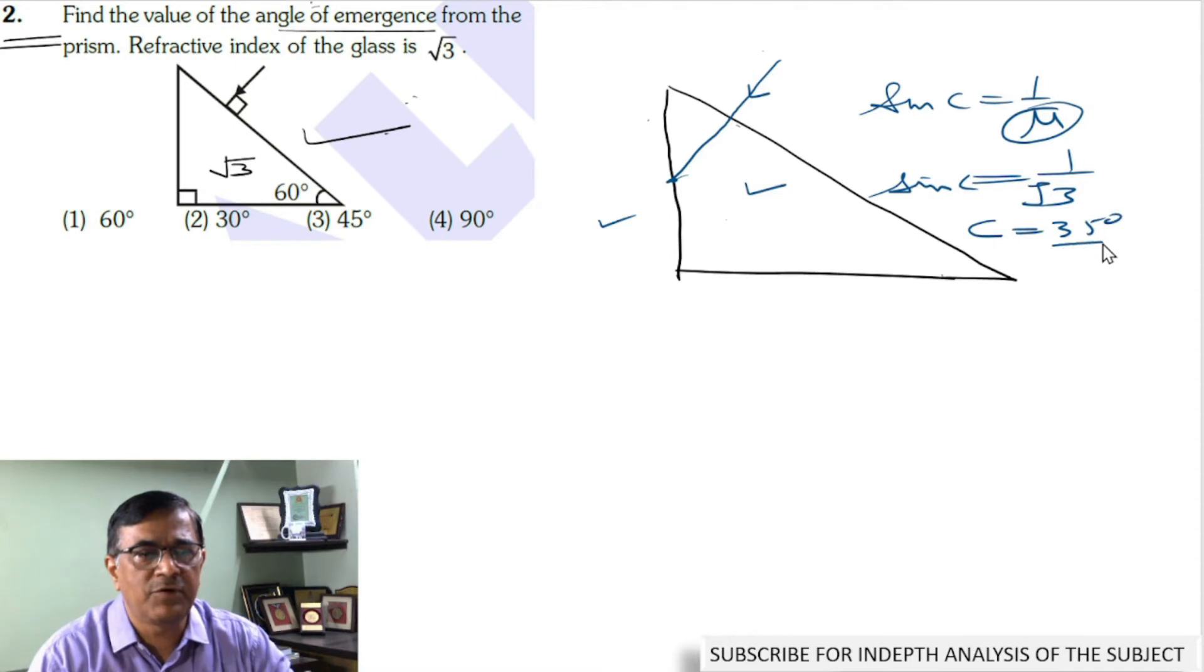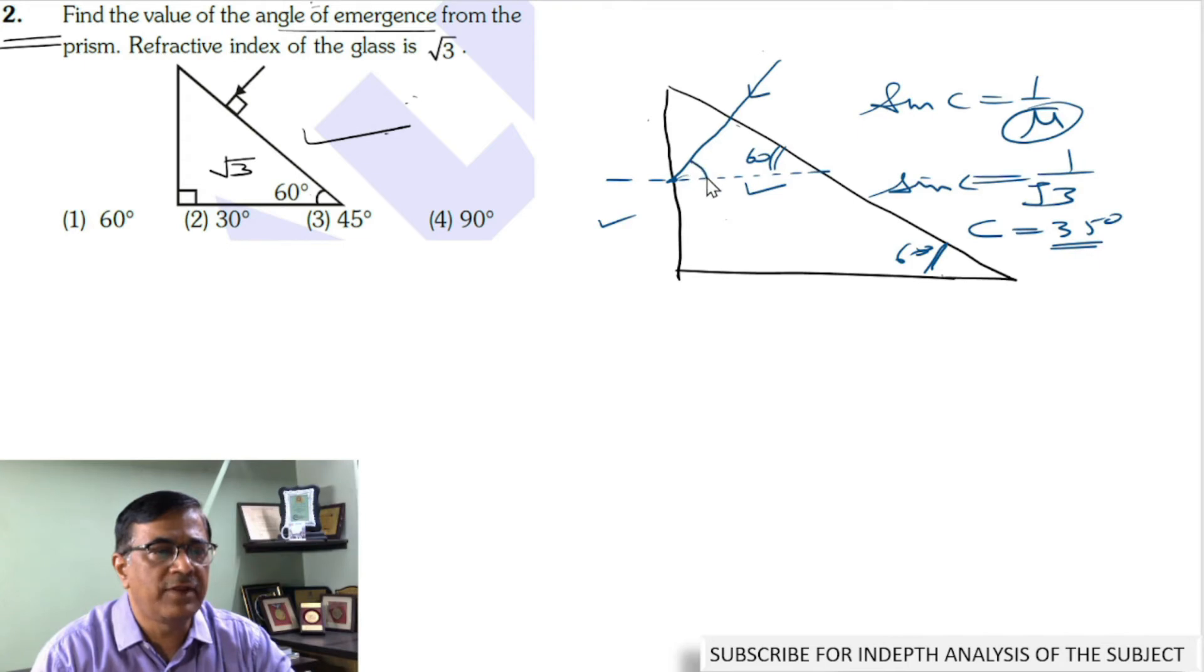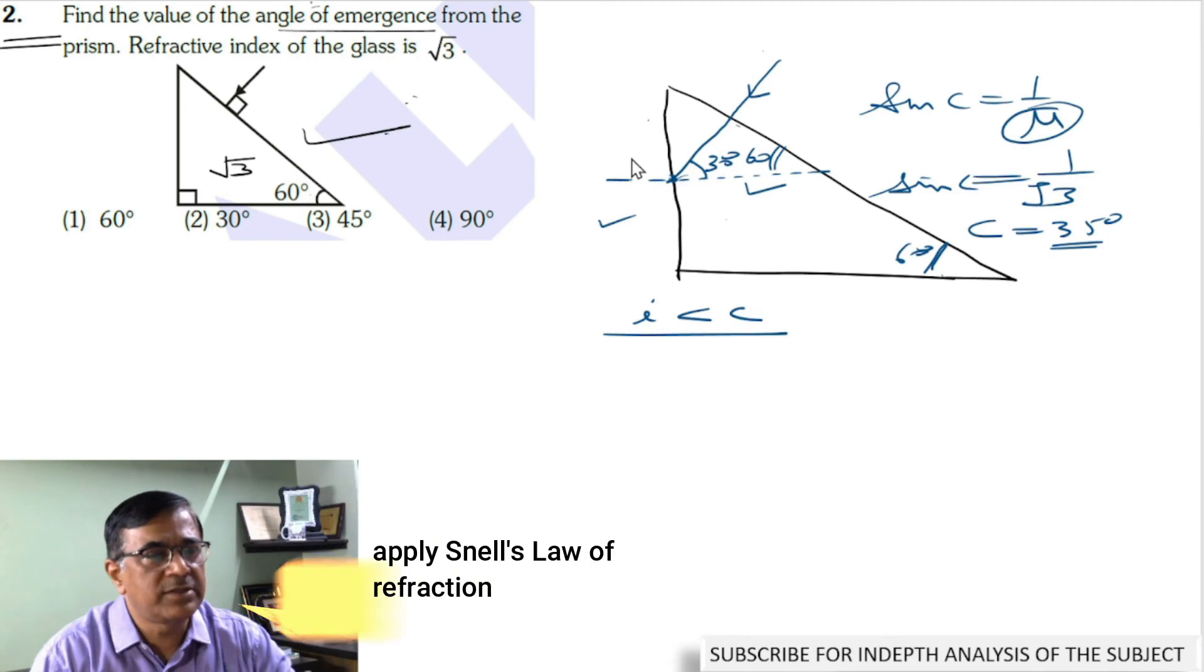Now at this point, this is the normal. This angle is given to be 60 degrees, so this angle will also be 60 degrees, and the angle of incidence at this point is 30 degrees. Because the angle of incidence is less than the critical angle, the ray will suffer refraction at this point. So apply refraction at this point P.